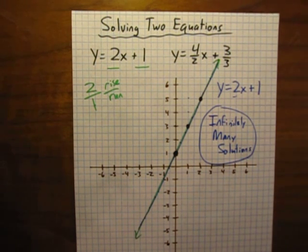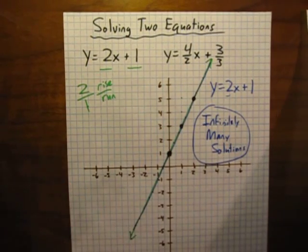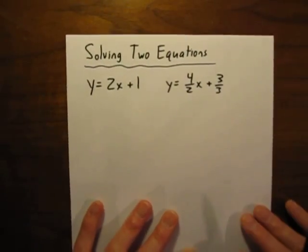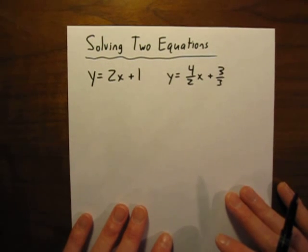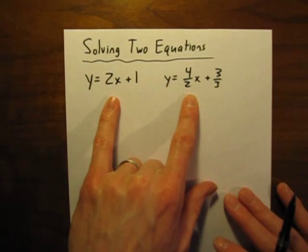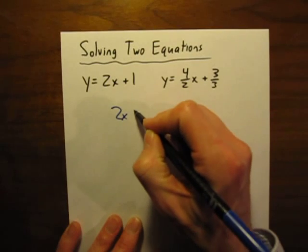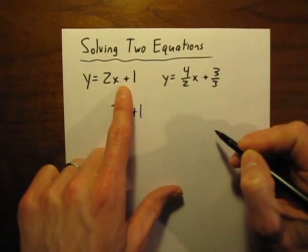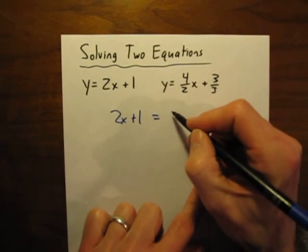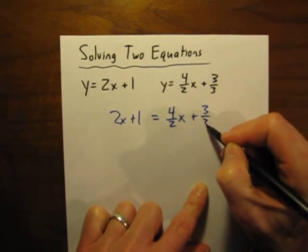What if you were solving algebraically? So, on a graph, you would notice, oh yeah, I'm just graphing the same line twice. What if you were going to try to solve the same 2 equations algebraically? Well, you've got these 2 equations here. We want to know where they meet. So, we set them equal to one another. So, 2x plus 1, that equation there, is equal to this equation here. 4 divided by 2x plus 3 over 3.